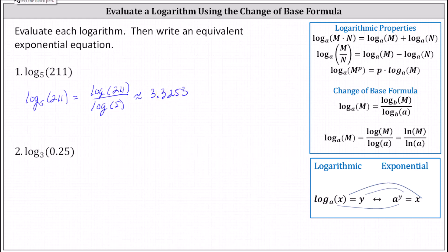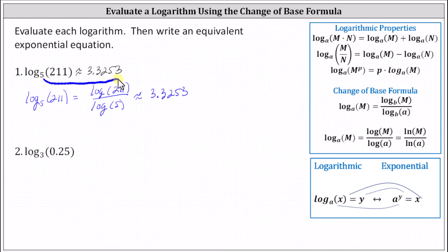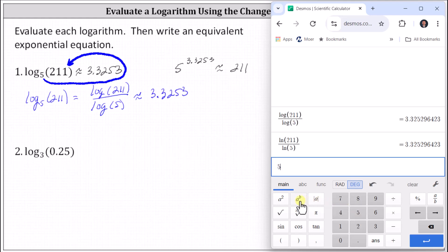So now we know log base five of 211 is approximately 3.3253. To understand what this means, we'll write the equivalent exponential equation. Converting the log equation to the equivalent exponential equation, we have five to the power of 3.3253. We did round, so this is an approximation. Let's check this on the calculator — five raised to the power of 3.3253. Notice it is very close to 211; it's a little bit more than 211 because we did round up.